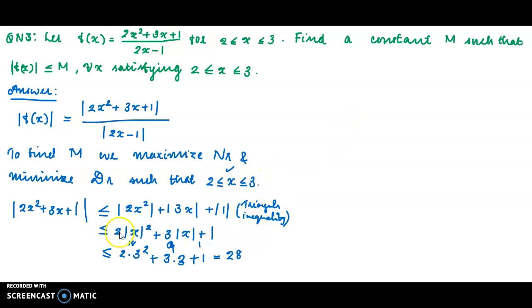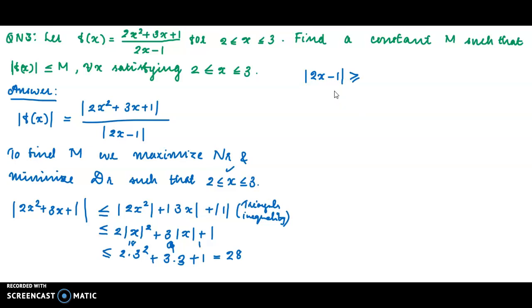The maximum value is 28, and now we have to minimize the denominator. For the denominator 2x minus 1, we apply the corollary: modulus of a minus b is greater than or equal to modulus of modulus of a minus modulus of b. So modulus of 2x minus 1 is greater than or equal to modulus of modulus of 2x minus modulus of 1.